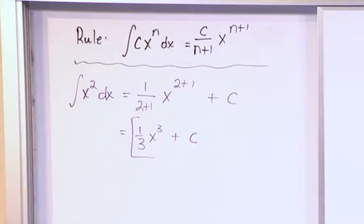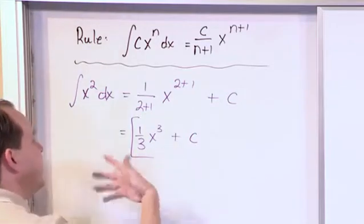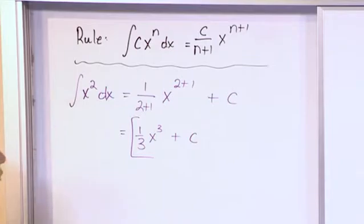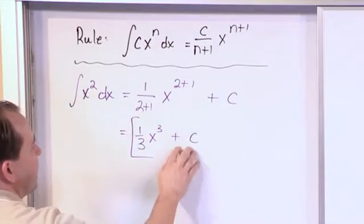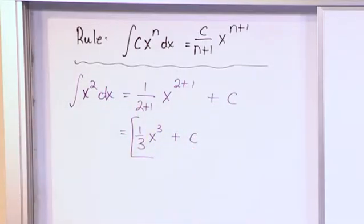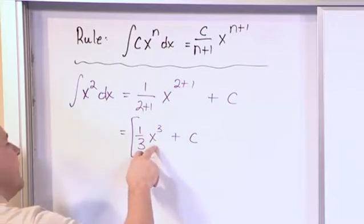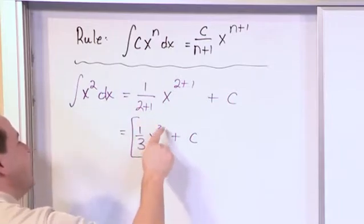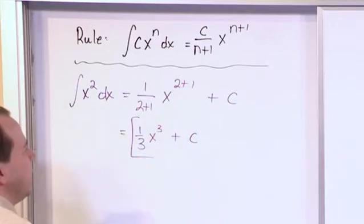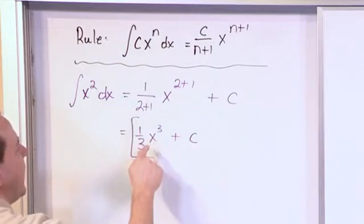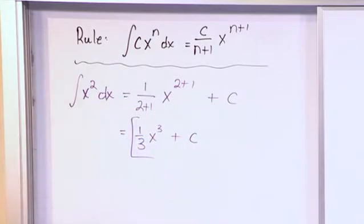That is the integral. That is the anti-derivative of this indefinite integral. And to make sure that you understand that it works, you should take the answer and take the derivative and see if you get back what you started with. If you take the derivative of this, the derivative of a constant is 0, so it goes away. The derivative of this is going to be 1 third times 3x squared. So the 1 third and the 3 are going to go away and you're going to be left with x squared, which is exactly what you started with.